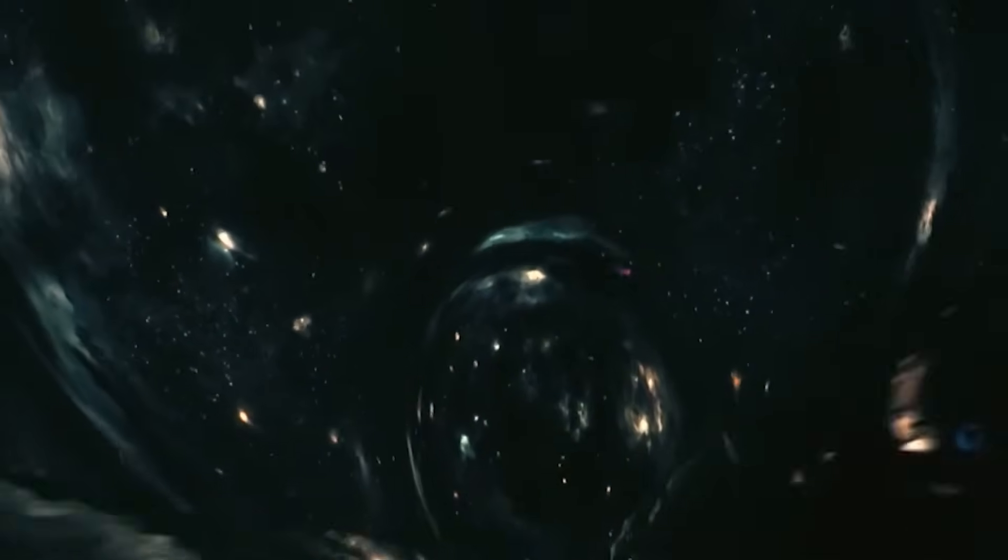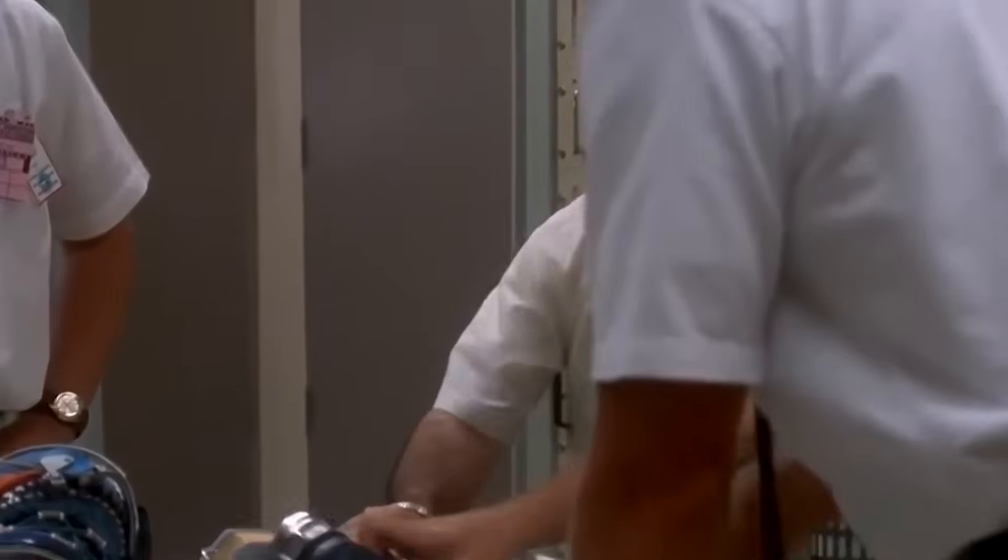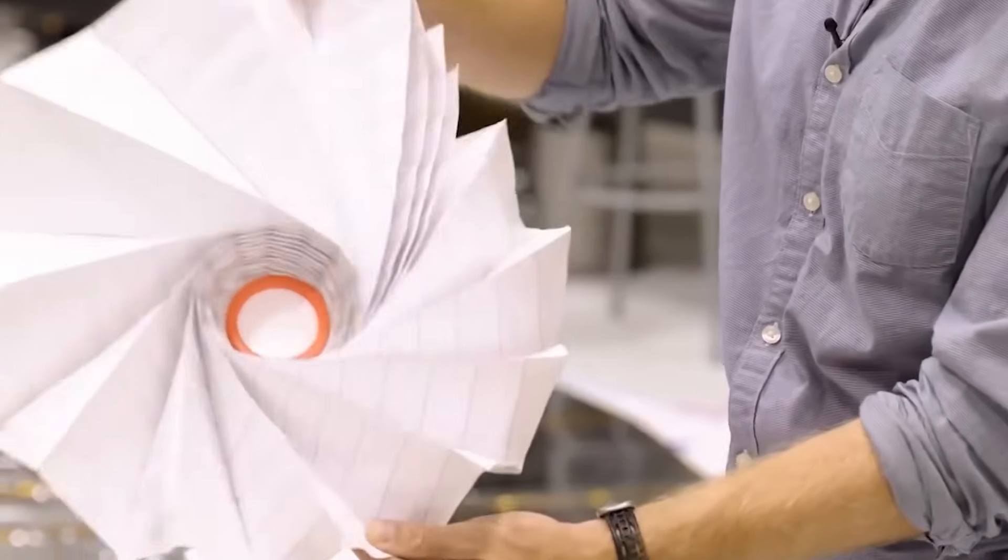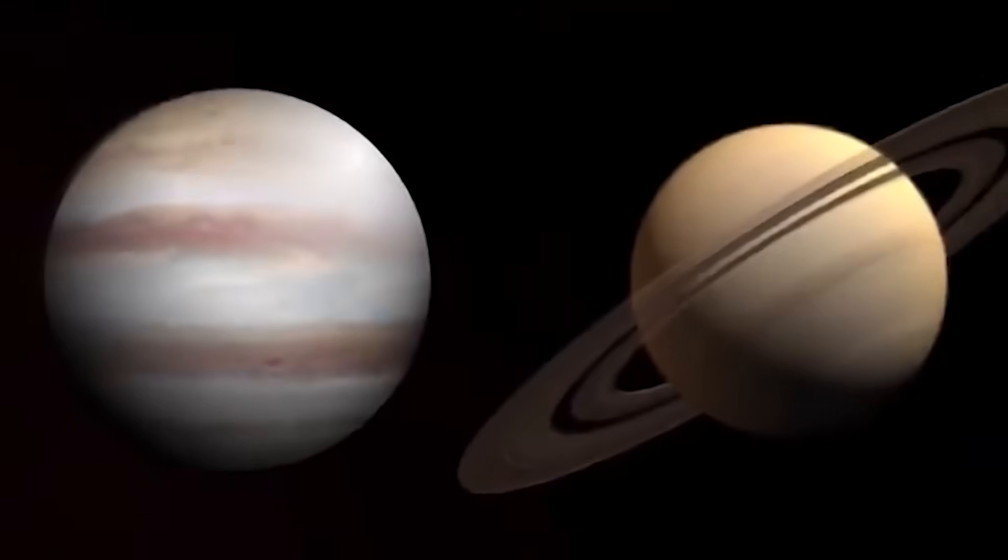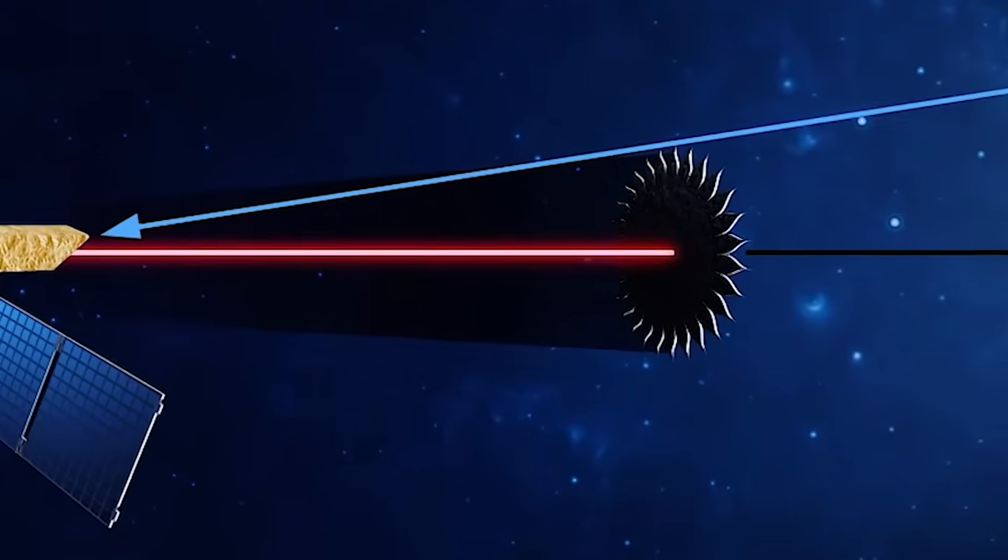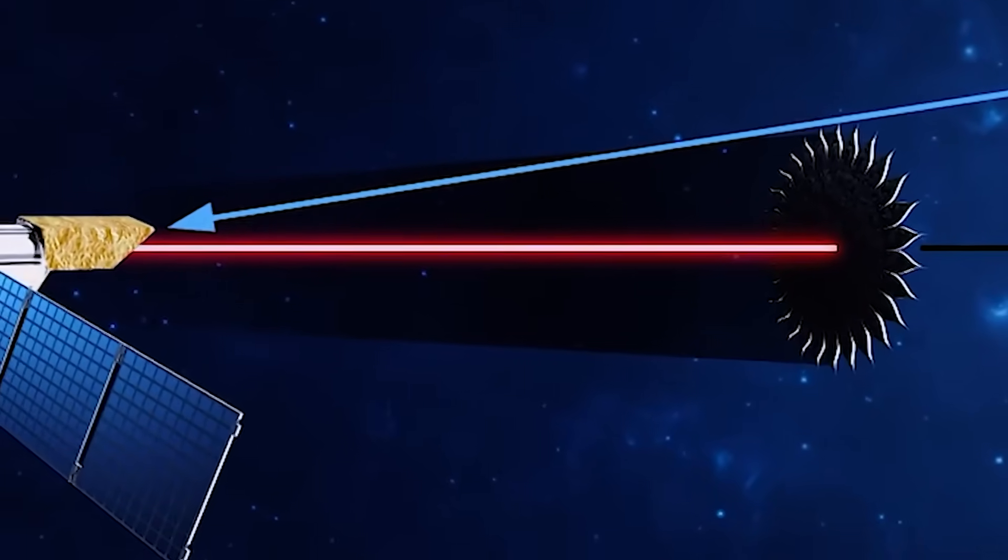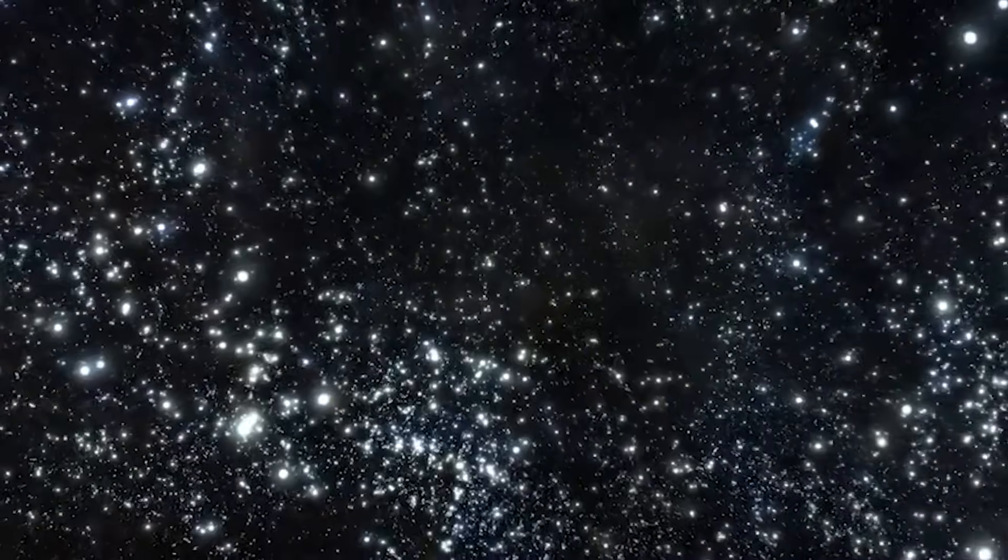Less dust means more light passes through, making galaxies look older, bigger, and more evolved than they truly are. So maybe we're not seeing fully mature giants. We're catching glimpses of baby galaxies in their brightest, most energetic moments. That doesn't mean the early universe wasn't impressive. It was. But it's like walking into a concert during the final chorus and thinking the band's been playing like that for hours. You're just catching the peak of the show.